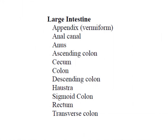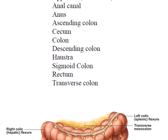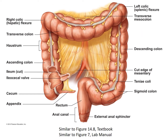We are now at the end, literally at the end of the digestive system, as we discuss the structures of the large intestine. This image is very similar to one in your textbook and lab manual showing the large intestine. The large intestine includes the alimentary canal starting from the ileocecal valve extending all the way to the anus. So all of this is large intestine.